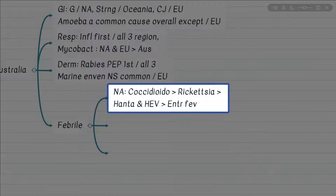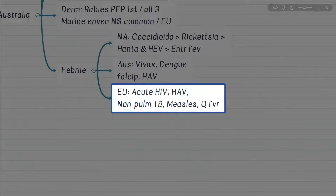Talking about febrile illness — we are discussing febrile illness among travelers to these developed countries, not residents. In North America, Coccidioides and rickettsial fever are common. In Australia, Plasmodium vivax and dengue are common. In Europe, acute HIV, hepatitis A, and non-pulmonary TB are common. This represents the type of febrile illness most commonly seen among travelers.